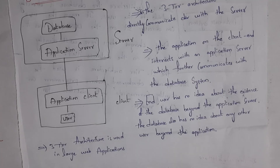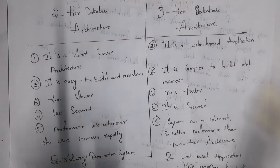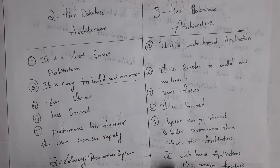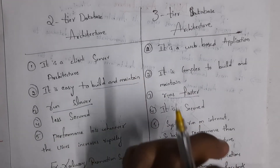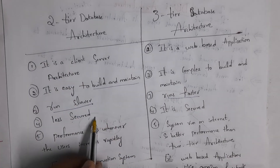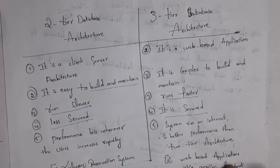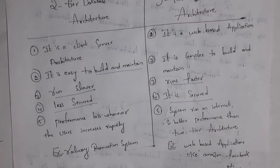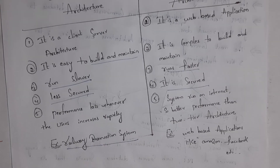Now, the difference between two-tier and three-tier architecture: Two-tier architecture is a client-server architecture where the client uses software and directly communicates with the database. Three-tier architecture is a web-based application, for example Amazon. Two-tier architecture is easy to build and maintain, whereas three-tier architecture is complex to build and maintain. Two-tier runs slower, while three-tier runs faster because it is a web-based application. As the user directly interacts with the database, two-tier architecture is not secure, whereas in three-tier architecture the user does not interact with the database directly, so data is secured. In two-tier, if users increase, performance decreases; in three-tier, which runs on the internet, even if users increase there is no problem with performance. Example of two-tier: railway reservation system. Examples of three-tier: Amazon, Facebook, and so on.